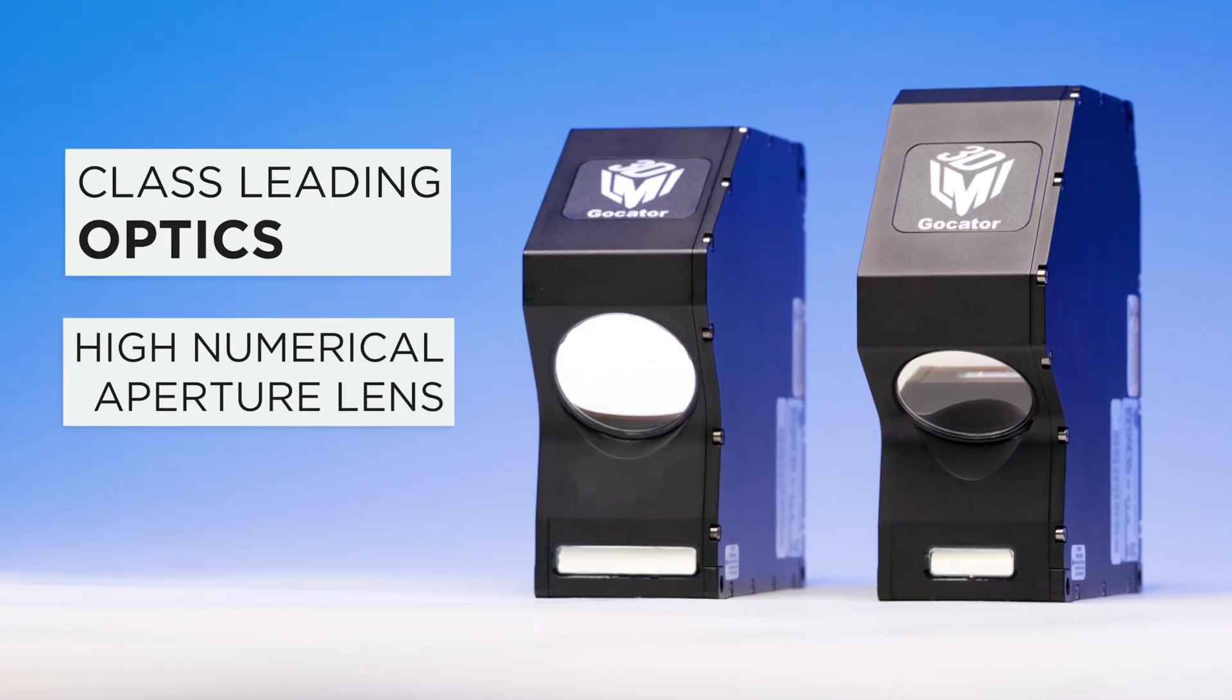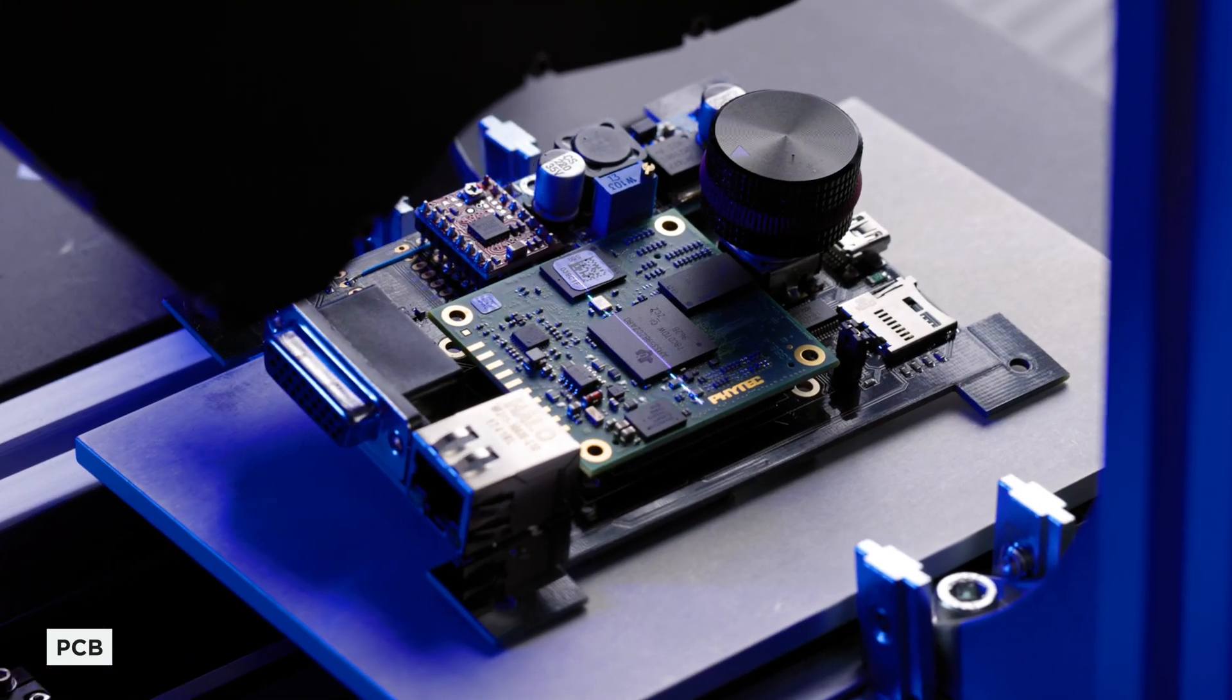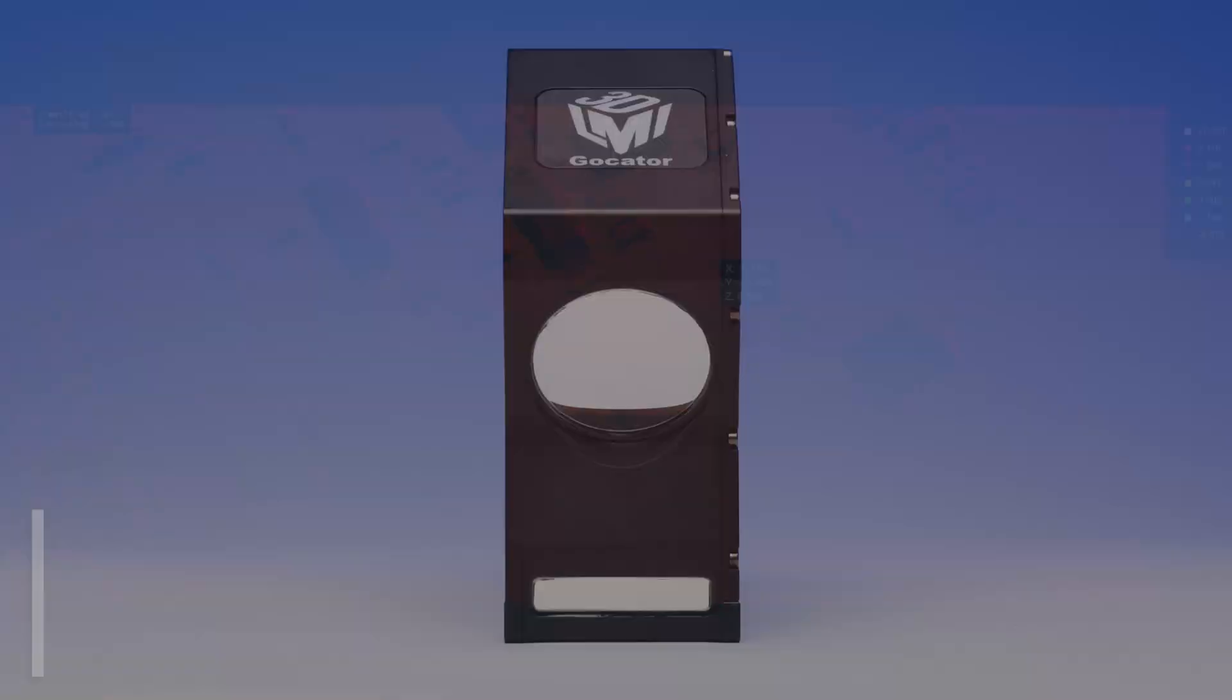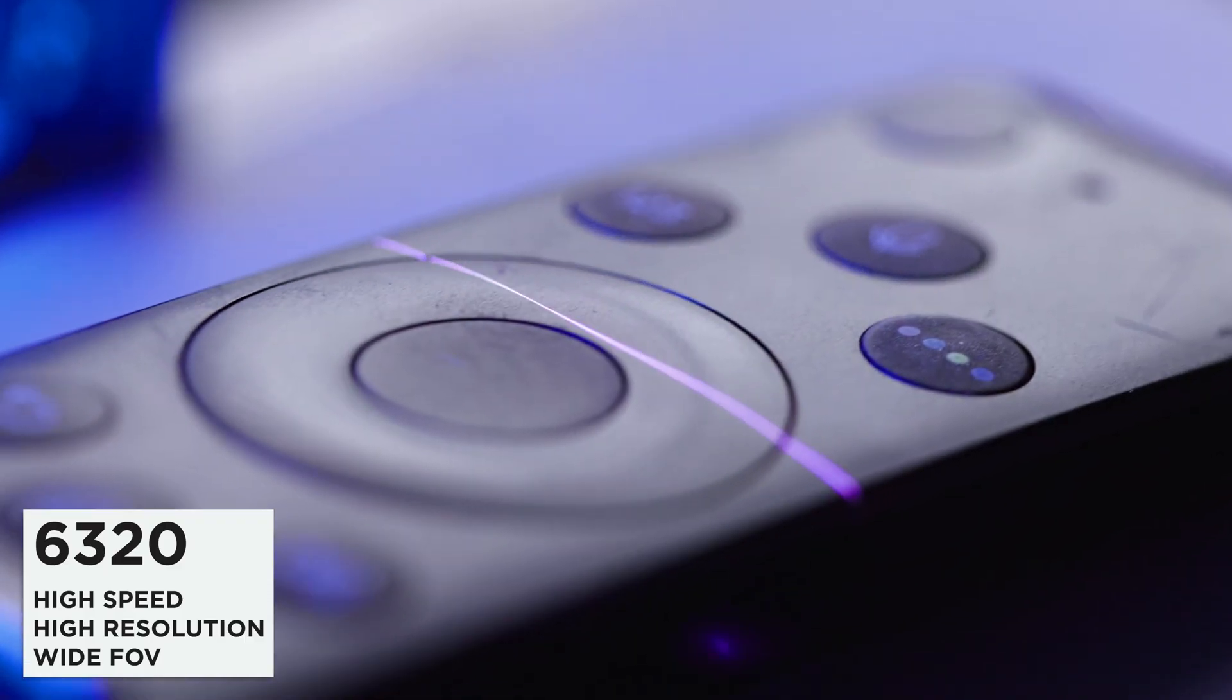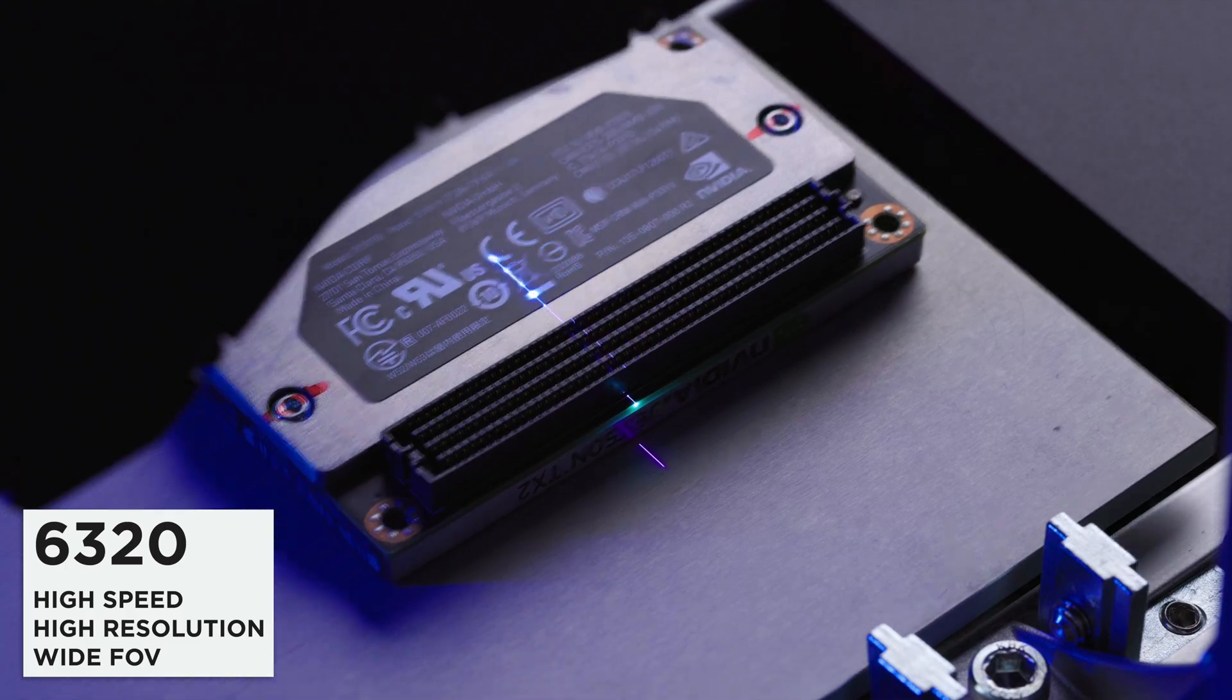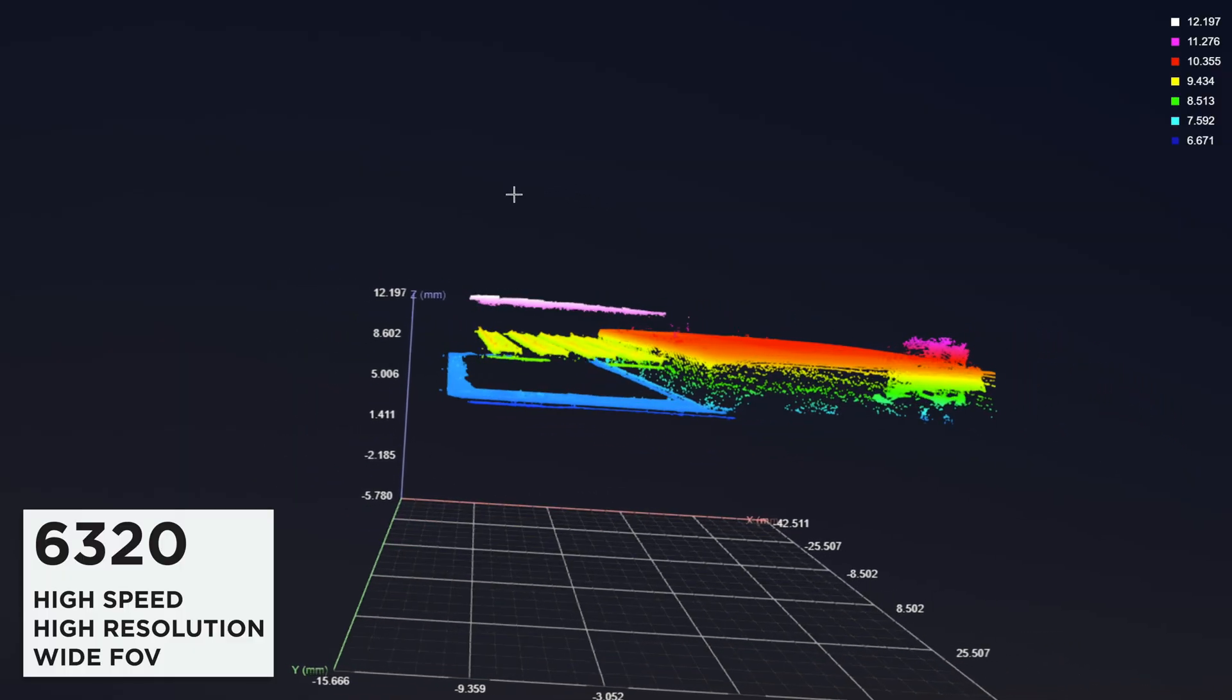A custom-designed high-numerical aperture lens further enhances performance, maximizing light collection for exceptional accuracy on challenging targets. The 6320's field of view is nearly double the size of other best-in-class sensors, making it suitable for a wide range of applications.